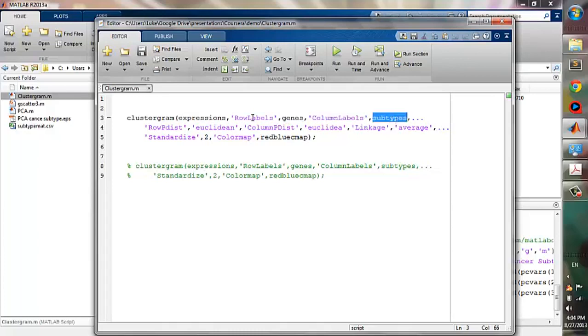And then the column labels, which are the subtypes. Then are the row pdist and column pdist, which specify the metrics to be used in row-wise hierarchical clustering and column-wise hierarchical clustering. We will use Euclidean for both. The linkage function, we will use average.